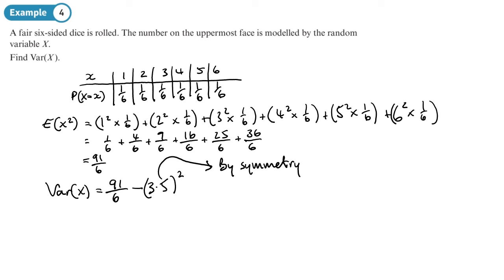So remember what we said, if you've got a symmetrical table like this in terms of probabilities and outcomes, the mean is going to be in the very center. So I could do the working again but since I know it by symmetry I'll just write that down. So let's now do ninety-one over six and I'm going to subtract three point five squared and I get thirty-five over twelve.